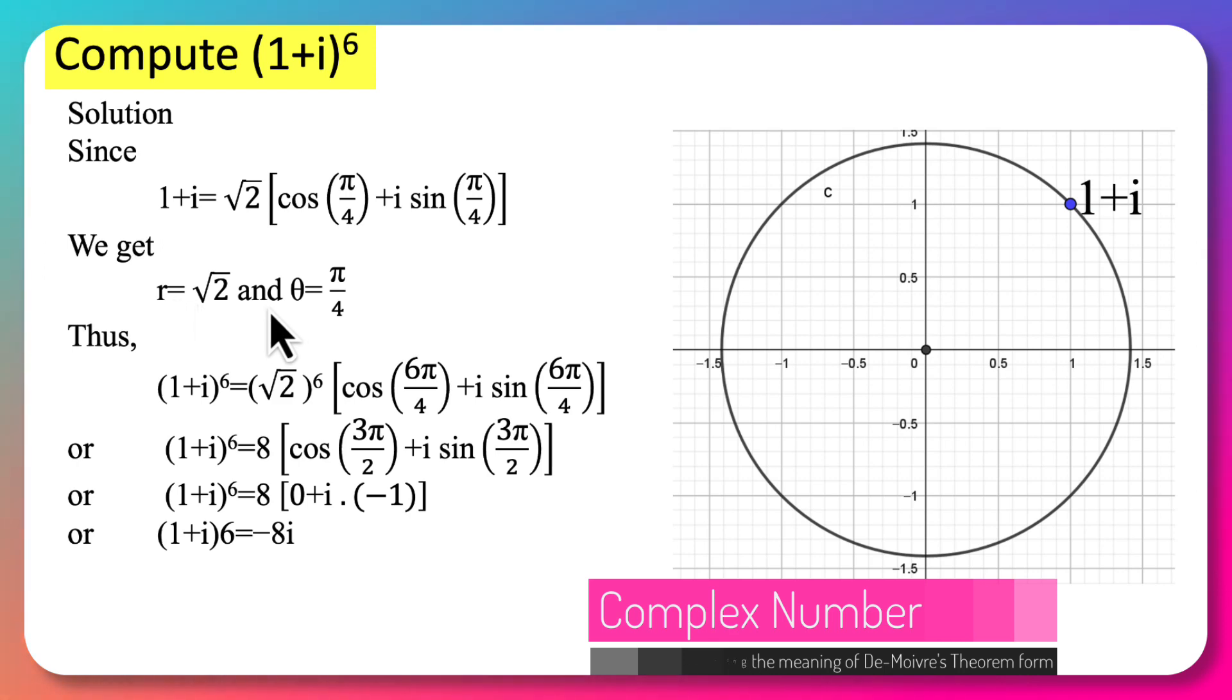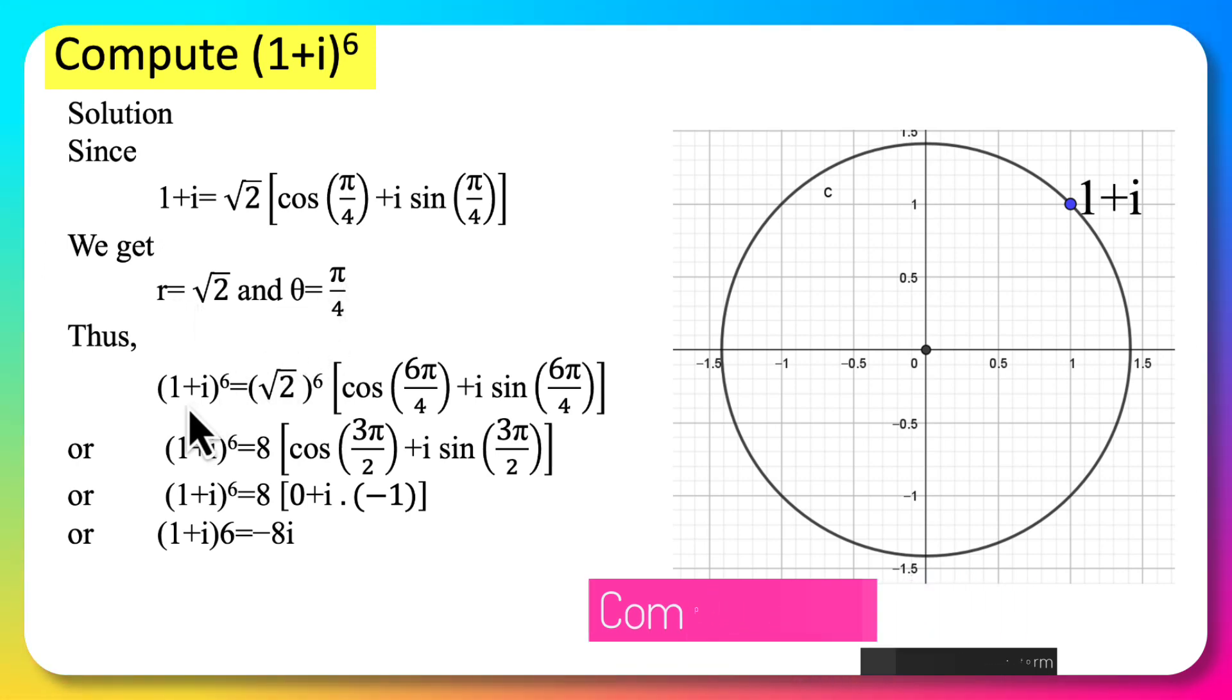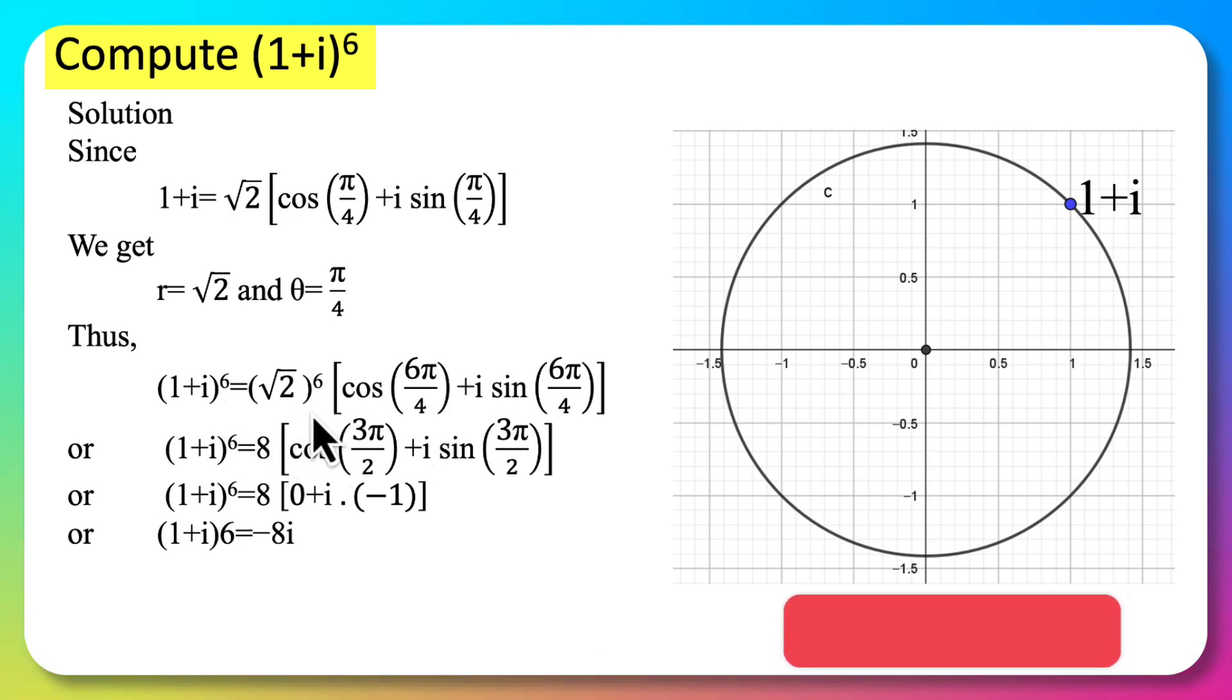Taking r = √2 and θ = π/4, we can compute the complex number (1+i)^6 using De Moivre's theorem. The answer is (√2)^6 times (cos(π/4 × 6) + i sin(π/4 × 6)). With basic calculation we get the result -8i.